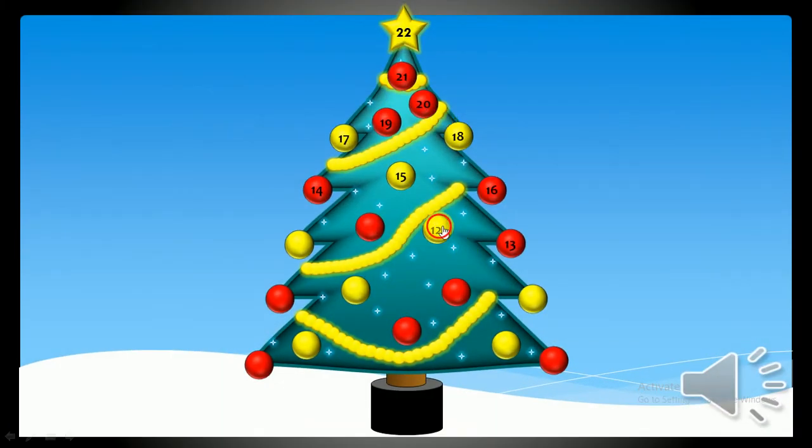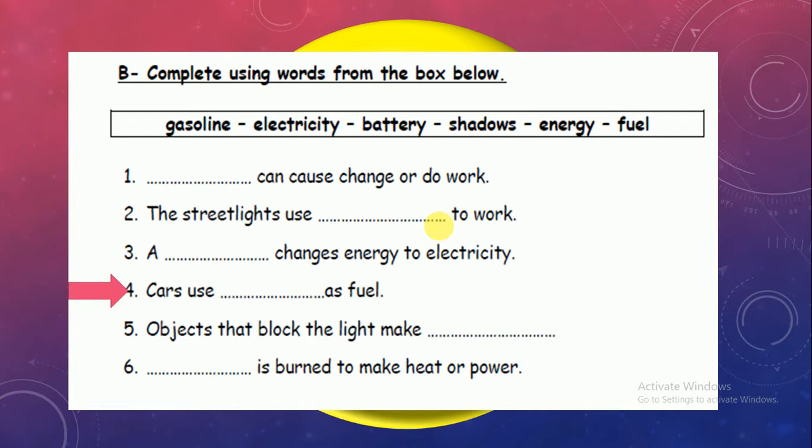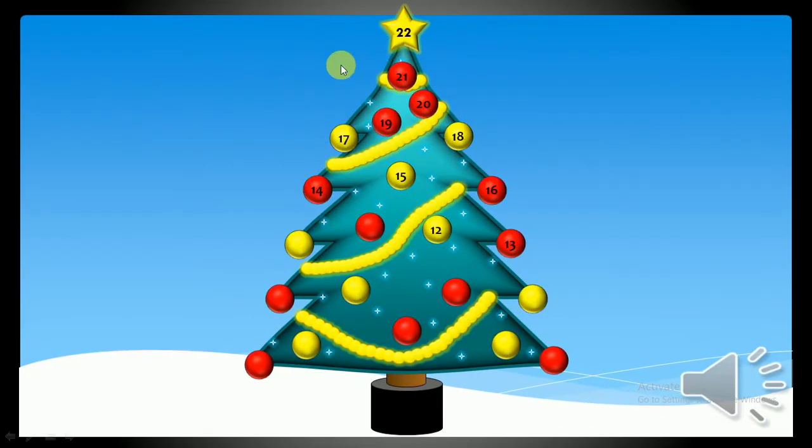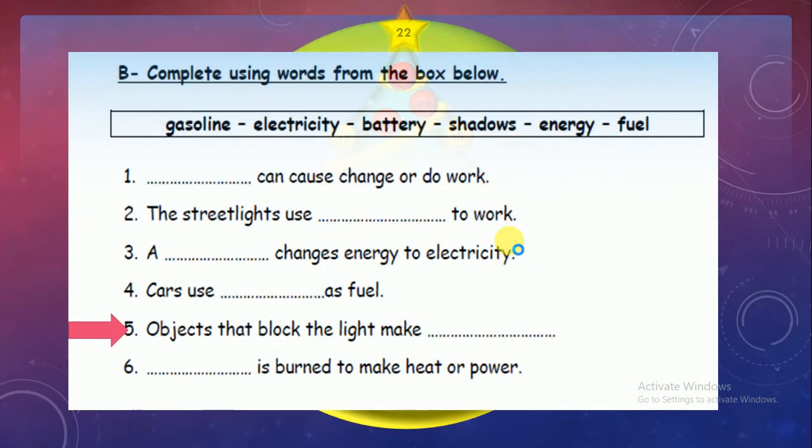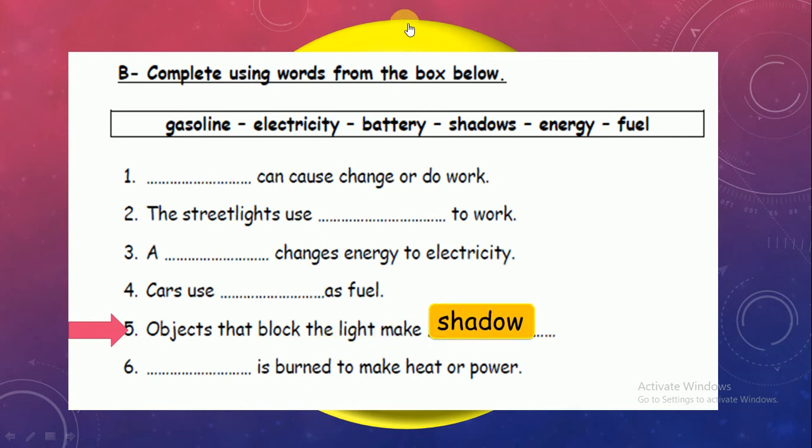Number 12. Cars use what as fuel? Gasoline, good job, good job. Okay, number 13. Objects that block the light make shadows. Good job, wow.